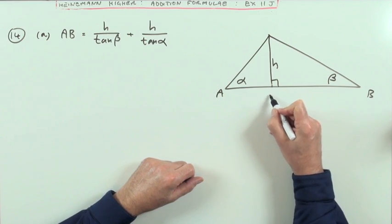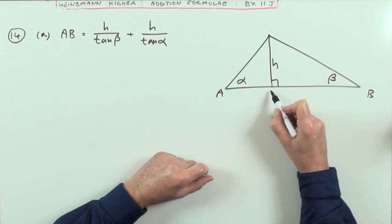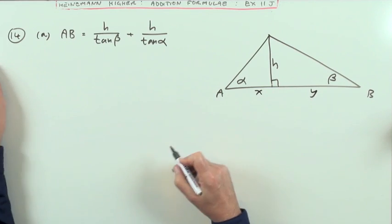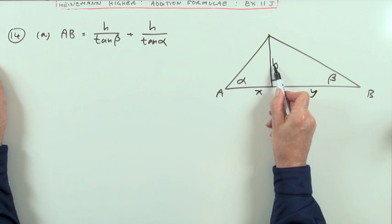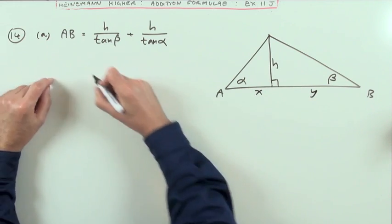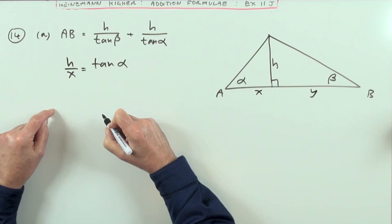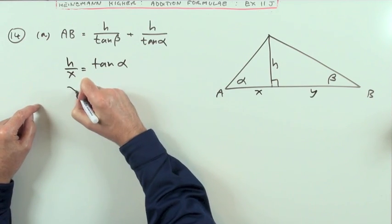I need to give these a couple of names. I could give the middle bit a name, but I'll just call these two parts x and y for instance. Then using simple trigonometry, I've got h and x make the tangent - h over x is the tangent of alpha.